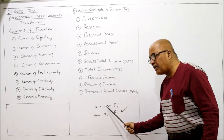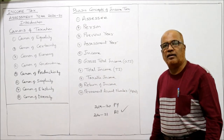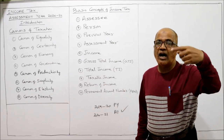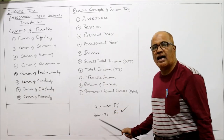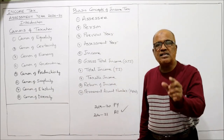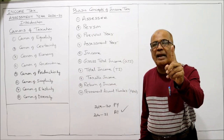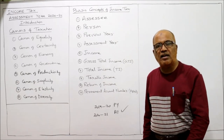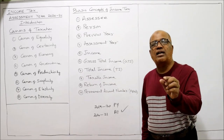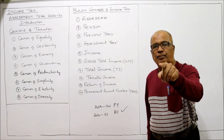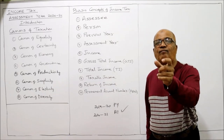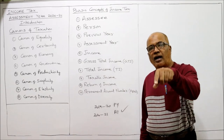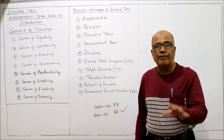The income earned during the previous year is taxable in the assessment year. That is why the previous year is called the income year. The assessment year means a period of 12 months beginning from 1st April and ending on 31st March of the following year. For example, the assessment year 2020-2021 starts on 1st April 2020 and ends on 31st March 2021. Income earned in the previous year is taxable in the assessment year, which is why the assessment year is called the tax year.